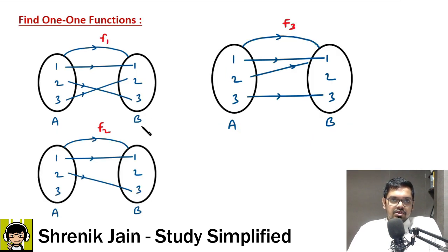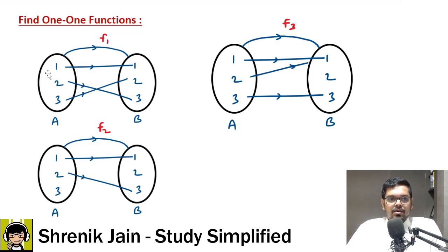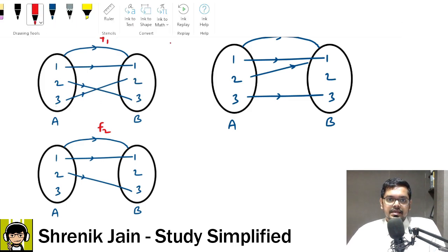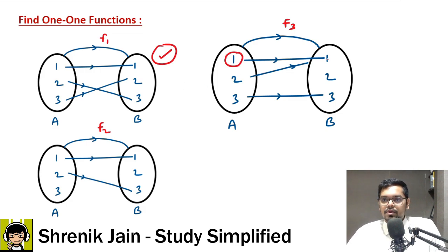Now I have three examples — you have to identify which of the following is a one-one function. For the first example: can I say it's a function? Yes, every input is connected and every input has only one output. So it is a function. Is it one-one? For one-one, every input should have unique output — all outputs here are unique. Therefore I can say it is a one-one function.